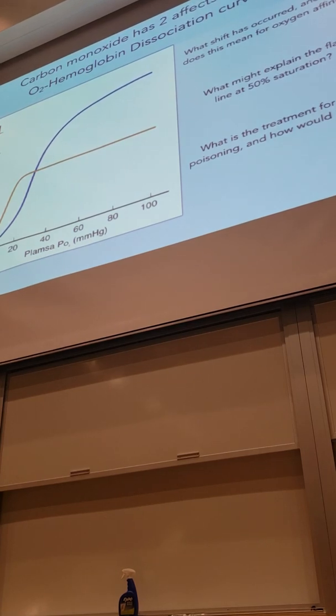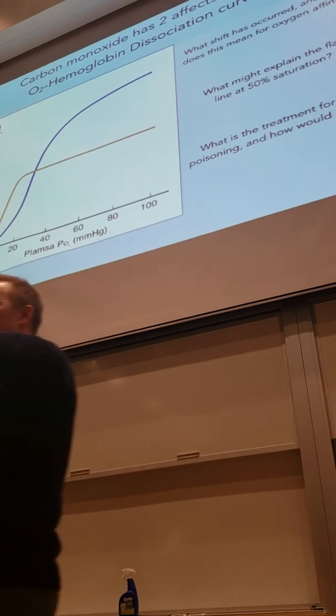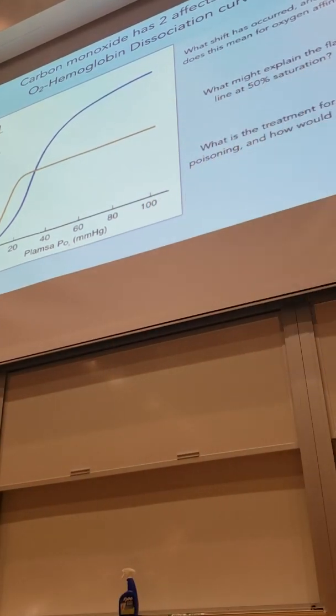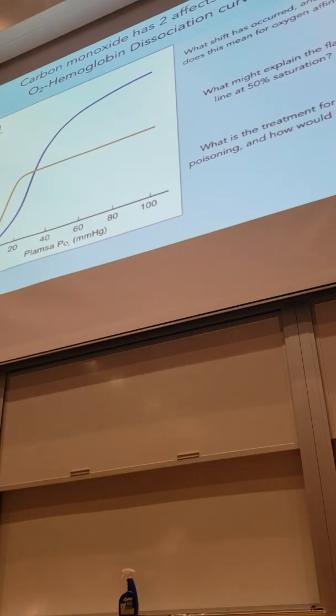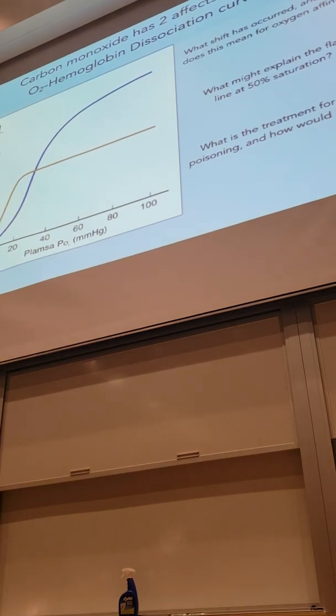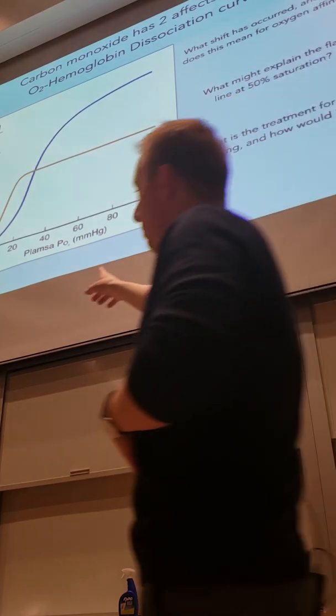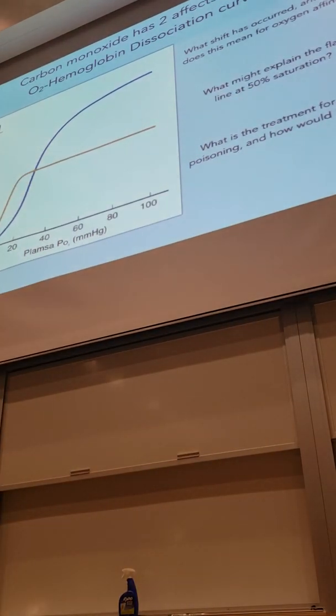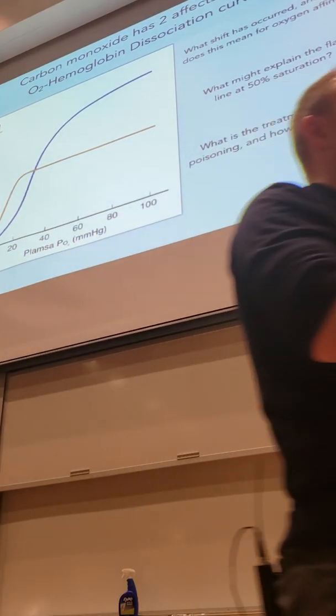What does it mean when we have a left shift? Do we have more affinity of oxygen hemoglobin or less? More. More affinity. So just draw a vertical line here. So at a given PO2, let's say 20, we're going to have much more oxygen bound to hemoglobin.